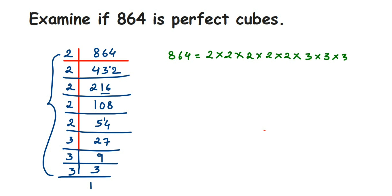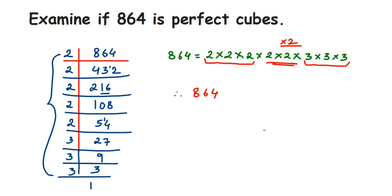If the number is a perfect cube, the factors will form sets of 3. This set of three 3s forms one complete set. In each set there should be 3 of the same factor. But here there are two 2s left over — they are not forming a complete set of 3. If there were another 2, it would form a set of 3, but two 2s — that is, 4 — is left out.